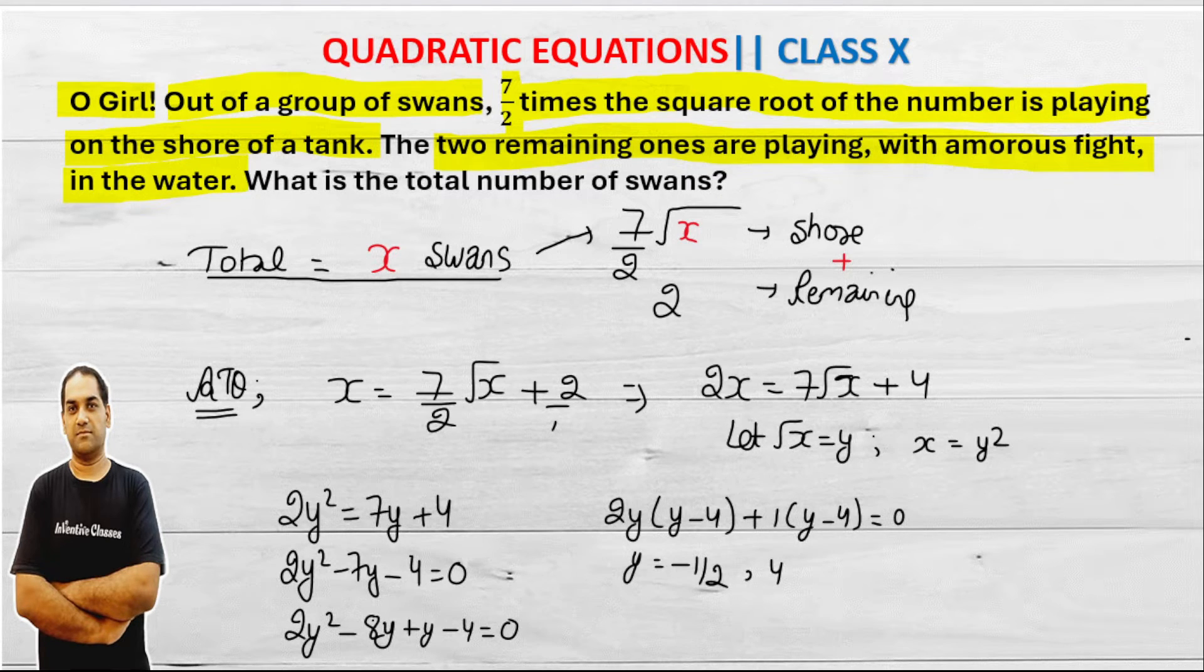No tension here. Now minus 1 by 2, we cannot opt because number of swans cannot be 1 by 2 and minus. So clearly, the value of y is 4.